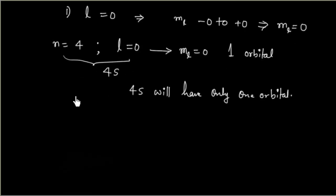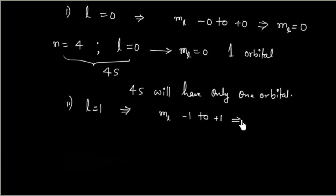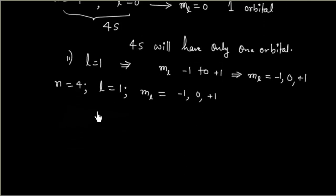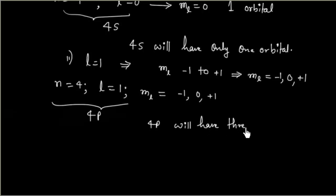For l equal to 1, ML lies between minus 1 to plus 1, including 0. So ML will be minus 1, 0, and plus 1 — three possible values. This means there are three orbitals. So 4p has three orbitals.